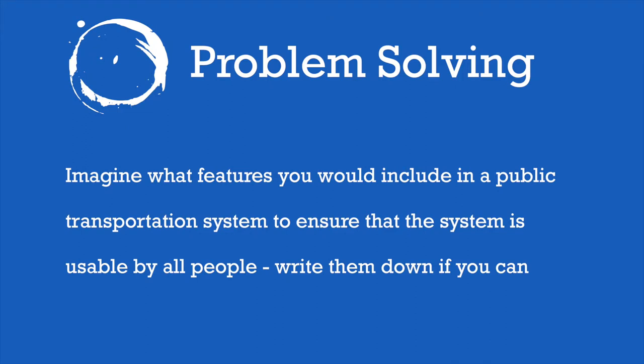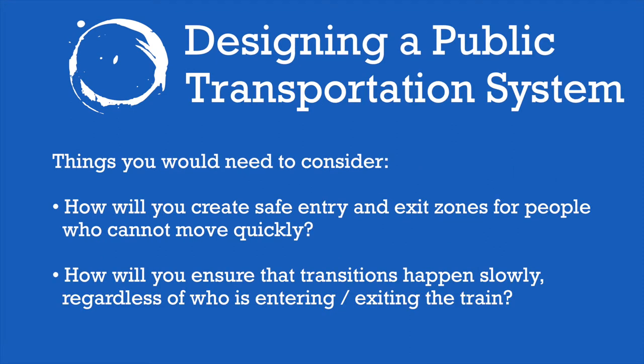We have talked about several features that you might include in a subway system to ensure that it is usable by all people. At this point, I want you to do some problem solving. Imagine what other features you would include in a public transportation system to ensure that the system is usable by all people. You can pause the video and write them down if you'd like. Some things you will need to consider: how will you create safe entry and exit zones for people who cannot move quickly? And how will you ensure that transitions happen slowly regardless of who is entering or exiting the train? You don't want someone getting stuck in the middle of a transition. You must also ensure that the flow of traffic is efficient for everyday use and for keeping with schedules.